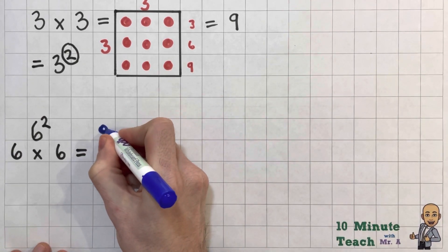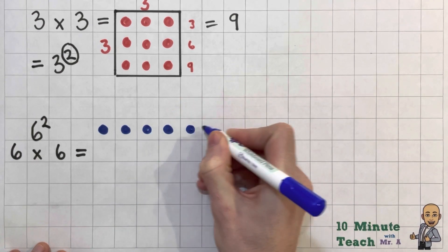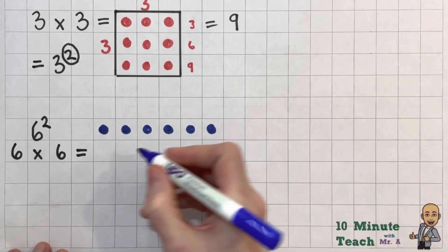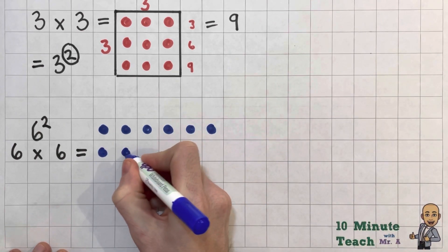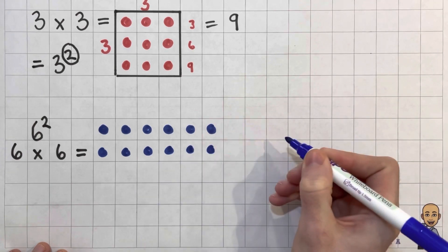Let's have a go then. So 1 lot of 6: 1, 2, 3, 4, 5, 6. You can also use counters for this just to make it a little easier for yourself if you wanted to. And then 1, 2, 3, 4, 5, 6. So that's 2 lots of 6.